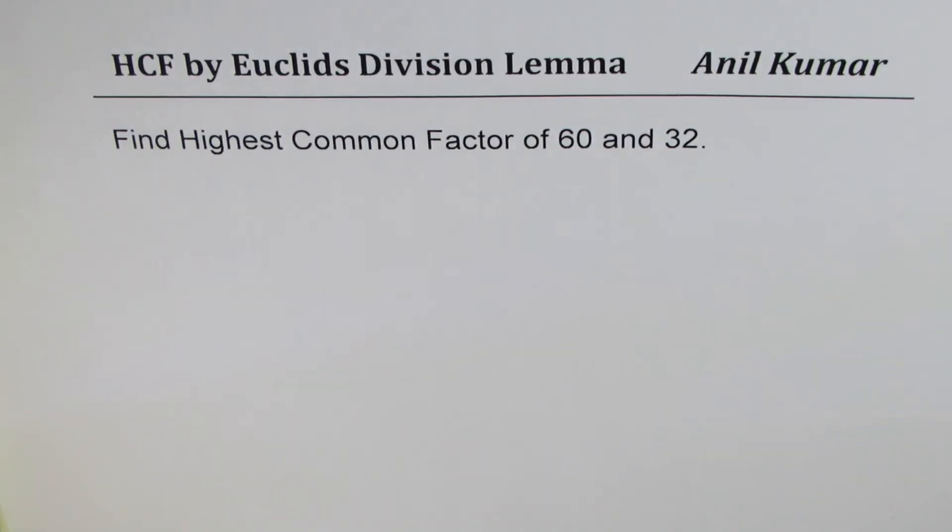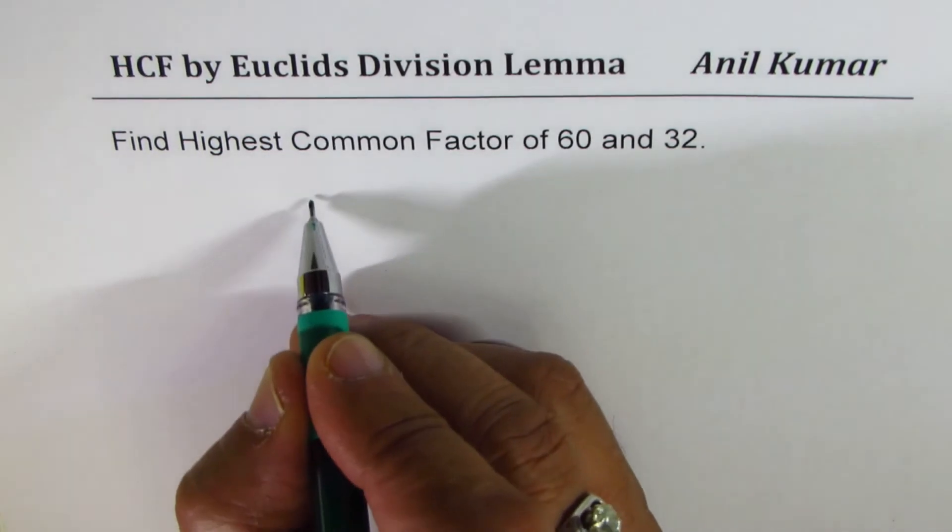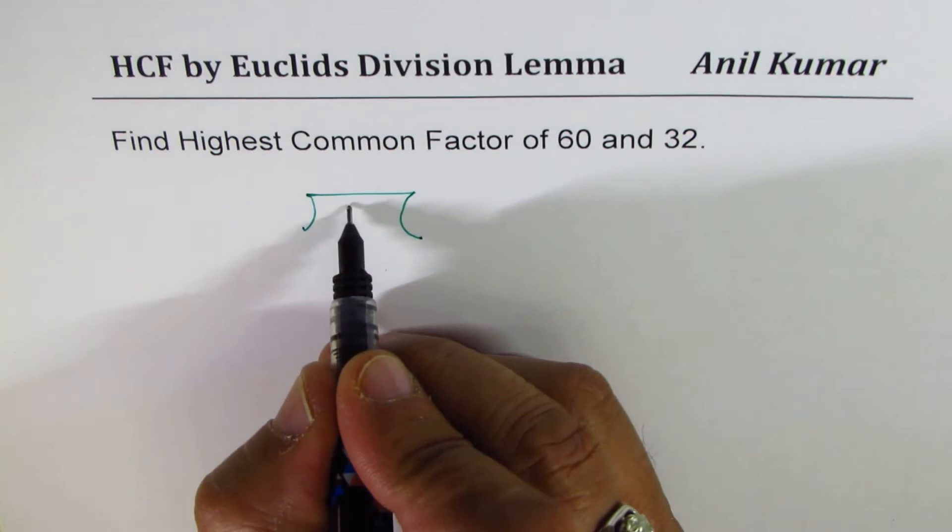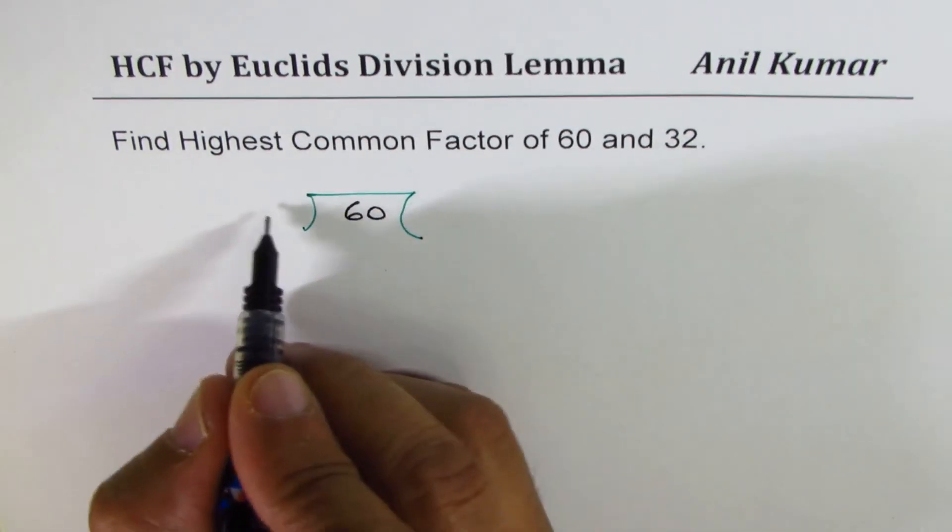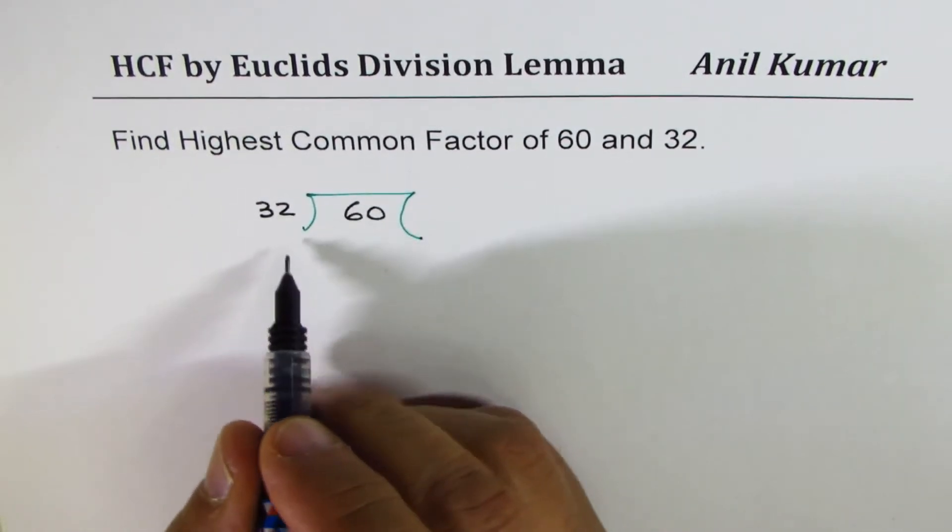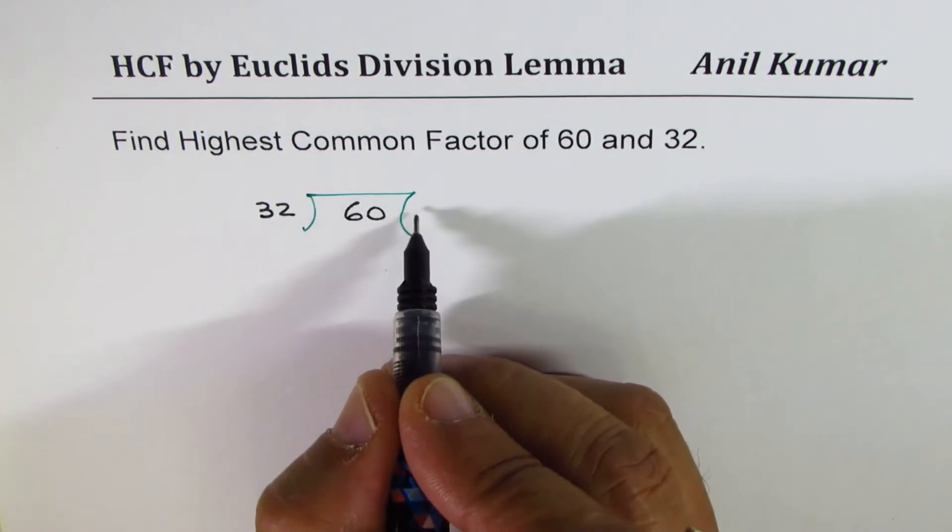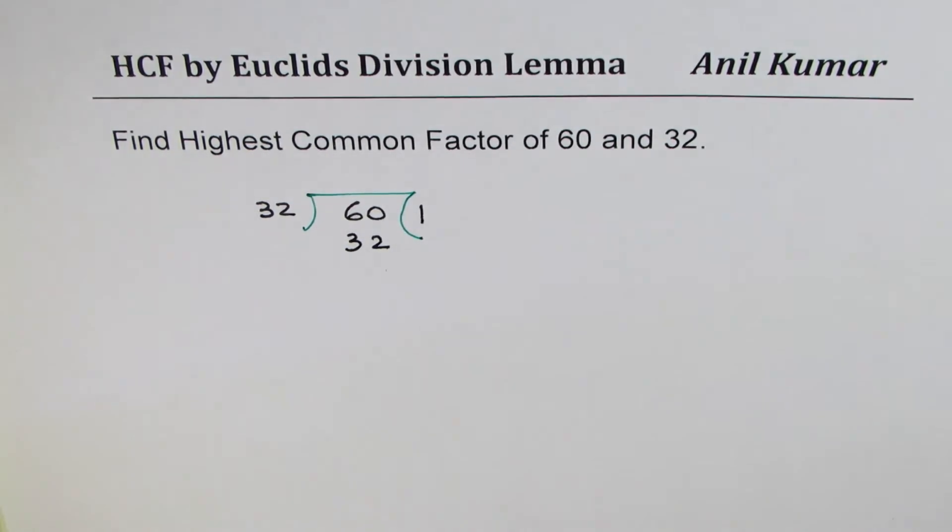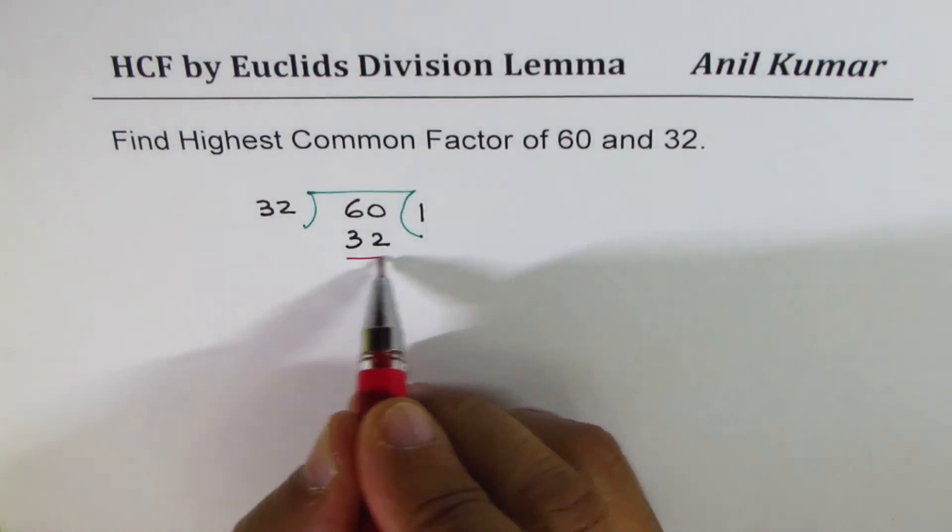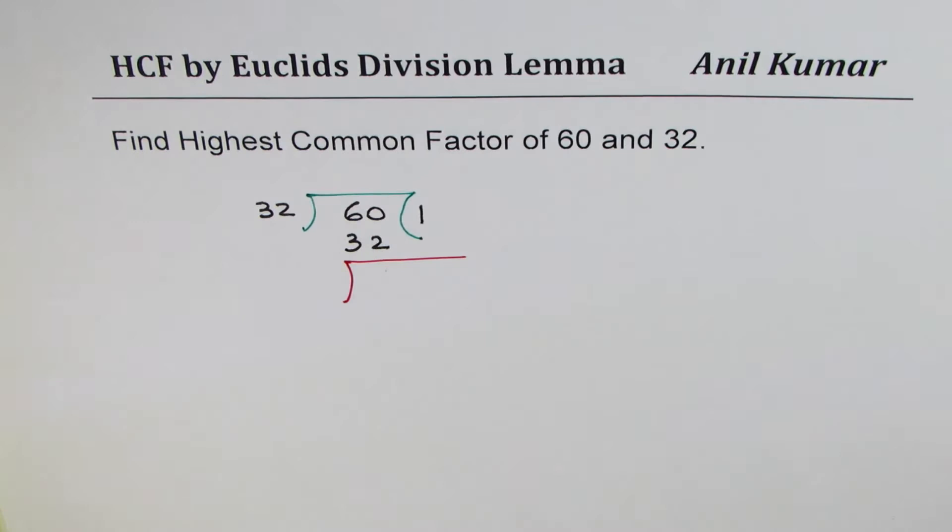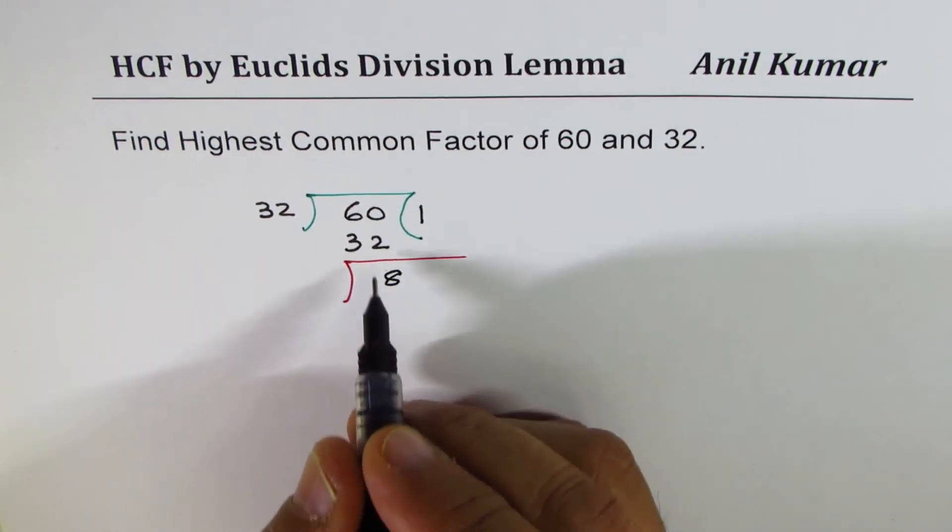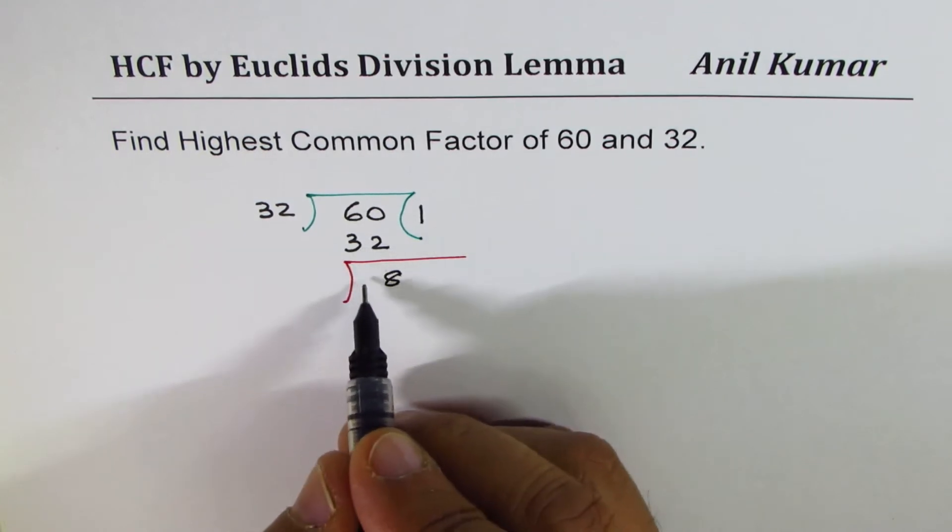Another practice question for you. This time, we have numbers 60 and 32. We'll divide 60 by 32. It goes once, so you get 32. When you take away, 10 take away 2 is 8. 5 take away 3 is 2. So the remainder is 28.